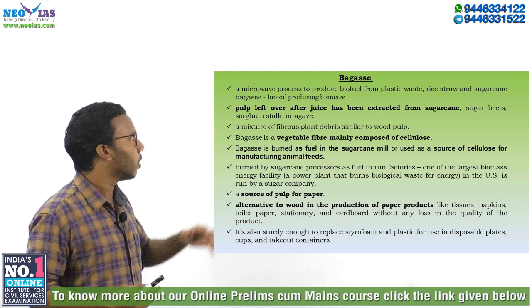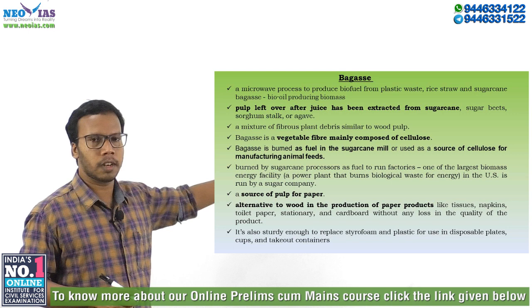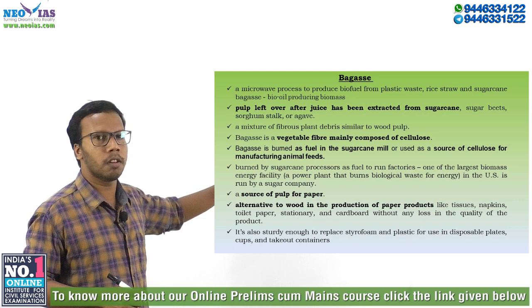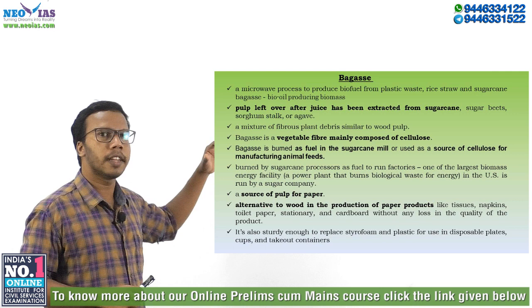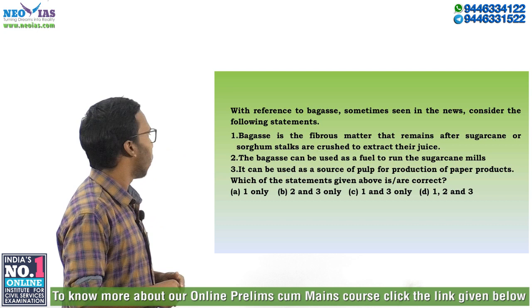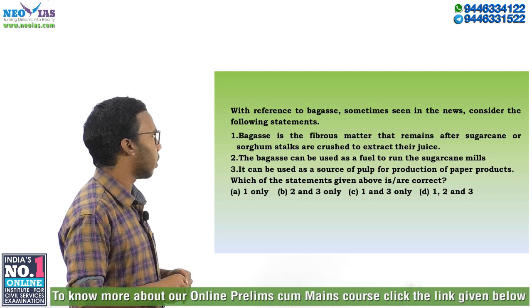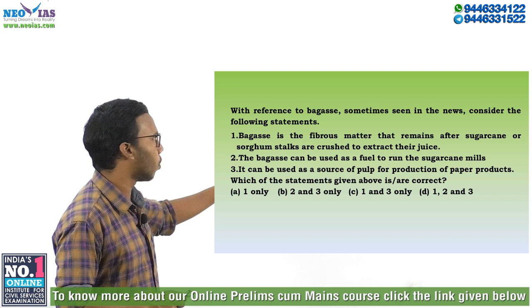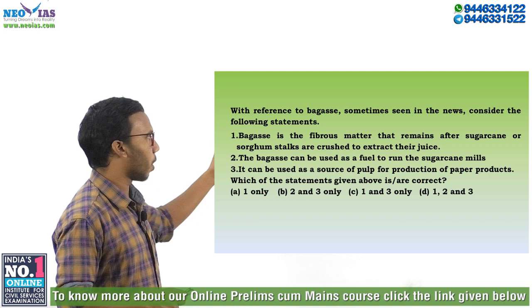To summarize the main points: bagasse is the leftover pulp of the sugarcane industry, which can be used as a fuel for burning as well as for the production of bio oil. It can be used in paper manufacturing and can replace styrofoam and plastics. Now for the model question: 'With reference to bagasse, sometimes in the news, consider the following statements.' Statement 1: Bagasse is the fibrous matter that remains after sugarcane or sorghum stocks are crushed to extract their juice — that is correct. Statement 2: Bagasse can be used as a fuel to run sugarcane mills — also correct. Statement 3: It can be used as a source of pulp for production of paper products — also correct. So the answer is D, meaning all three statements (1, 2, and 3) are correct.